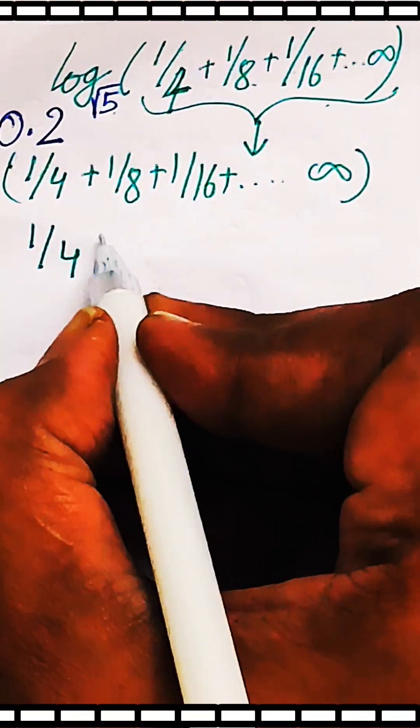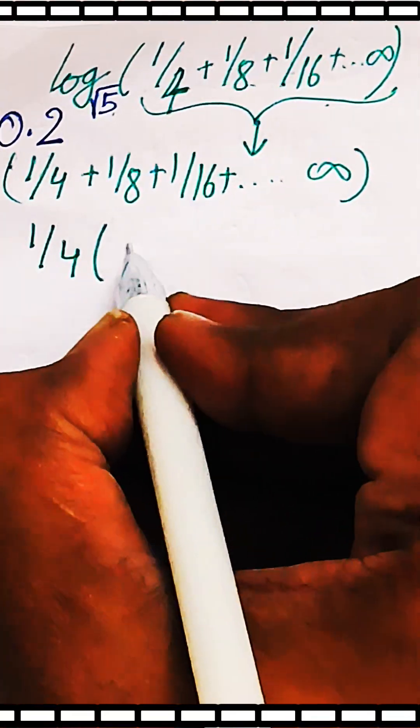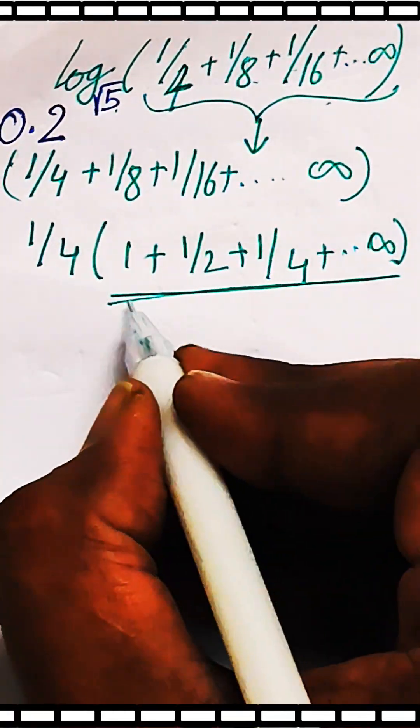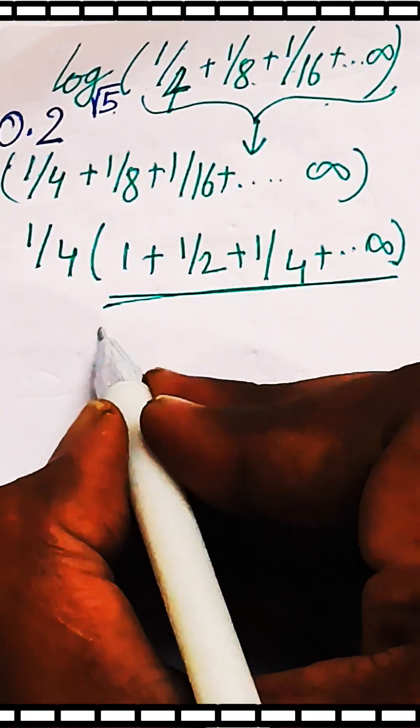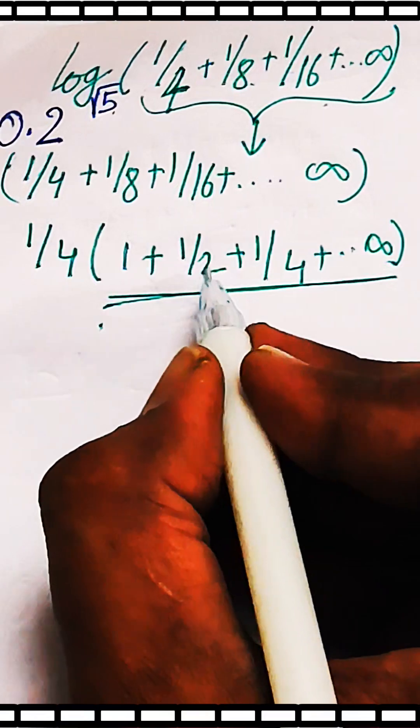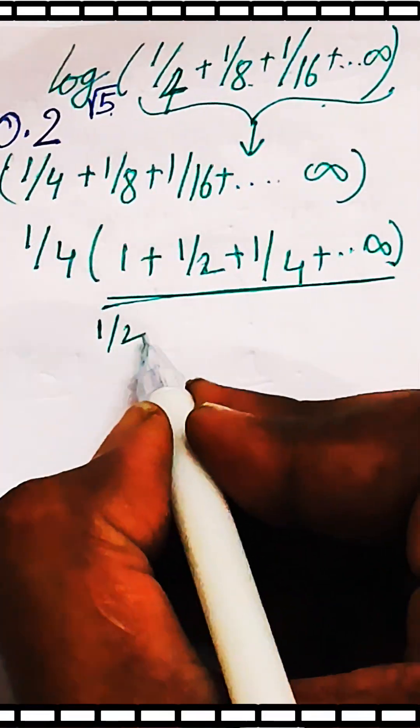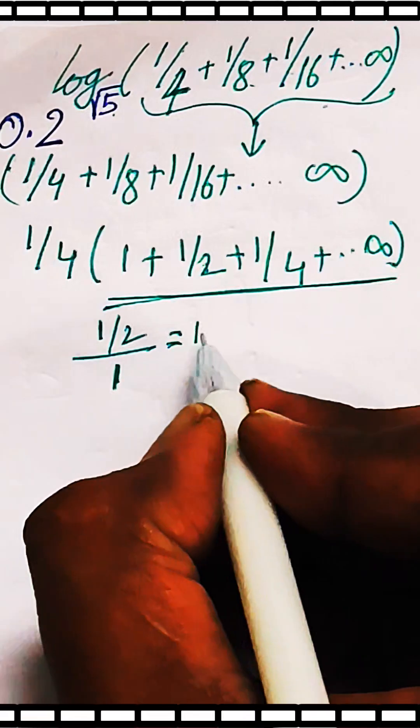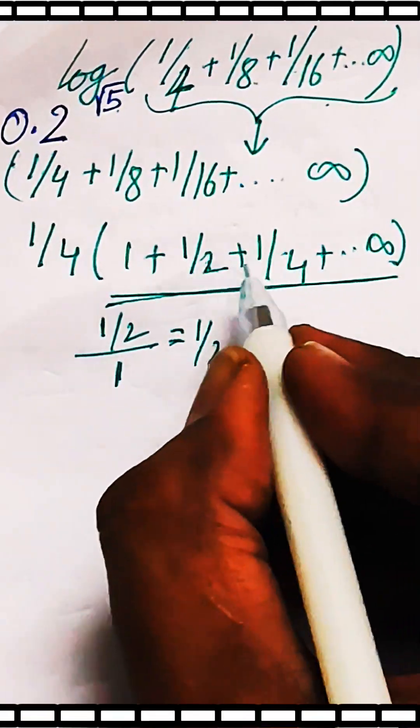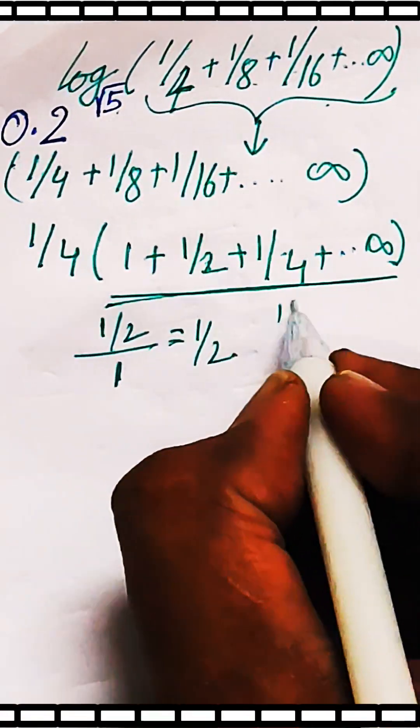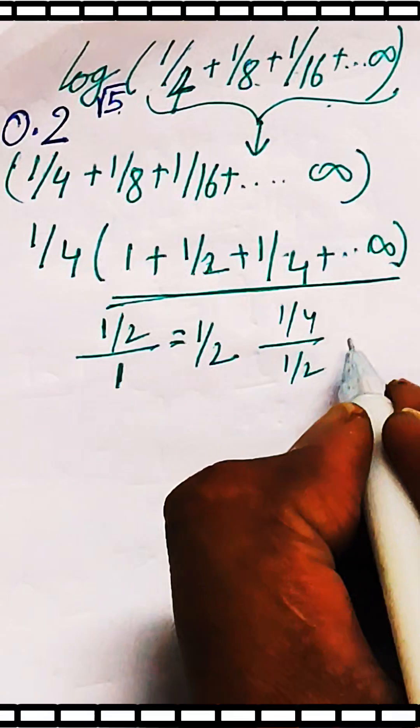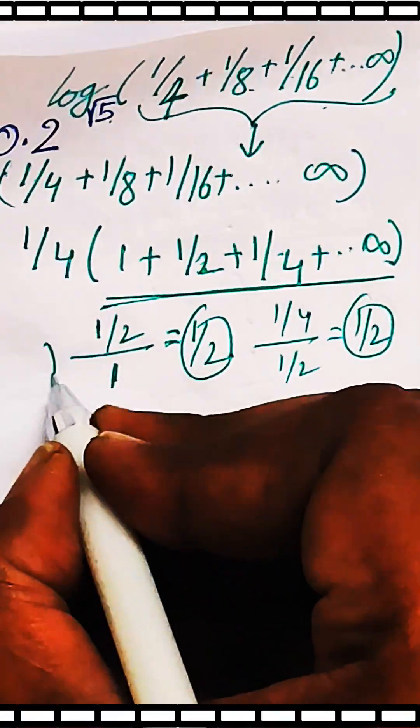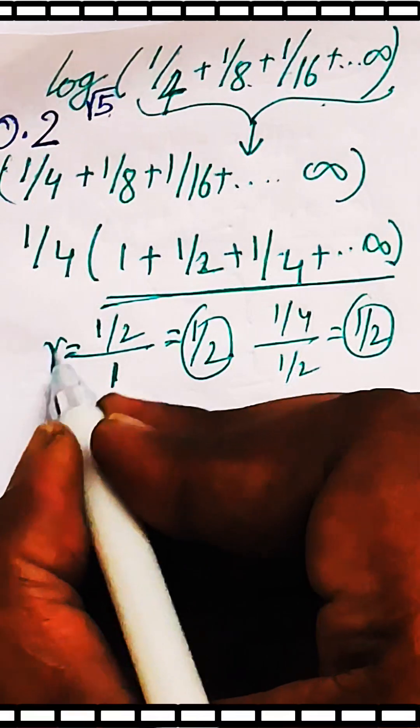If 1/4 is taken as common, we are left with a GP with a common ratio of 1/2. When 1/2 is divided by 1, this gives the common ratio as 1/2. When the third term is divided by the second term, this again gives the common ratio 1/2.